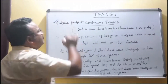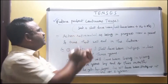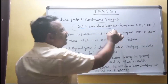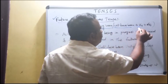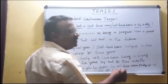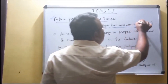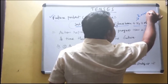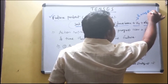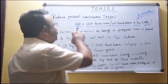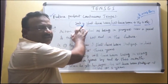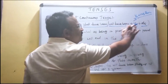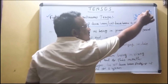Now let us discuss Future Perfect Continuous Tense. The structure is: subject + shall have been or will have been + V4 + object. Here V4 means V1 plus 'ing' — for example, 'study' plus 'ing' gives 'studying'.